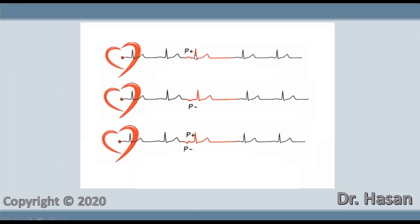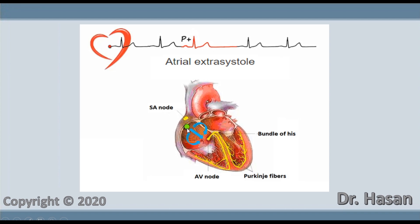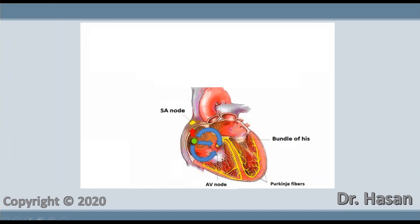Depending on the location of the pathological focus in the atria, we will have different forms of the P wave. If the focus is in the upper part of the atria, excitation is transmitted in only one direction toward the AV node, so the ECG records a positive P wave different from sinus P waves. If the focus is in the middle part of the atria, excitation spreads in both directions — toward and away from the recording electrode — so a biphasic P wave is recorded.